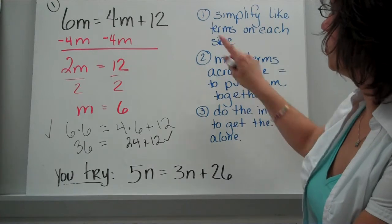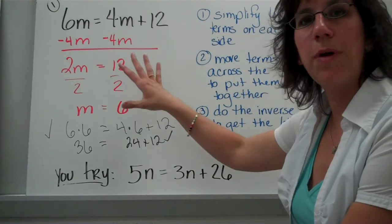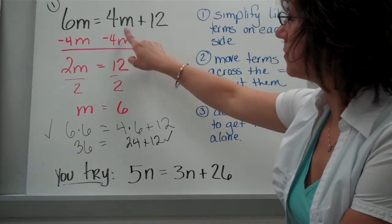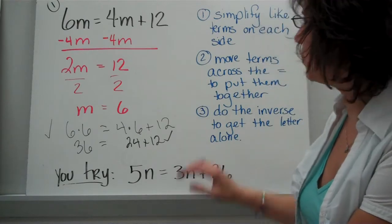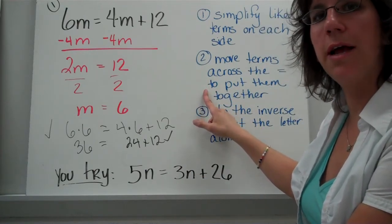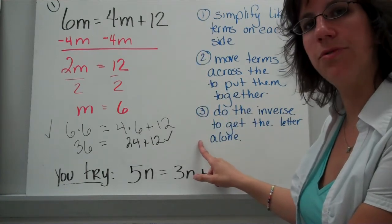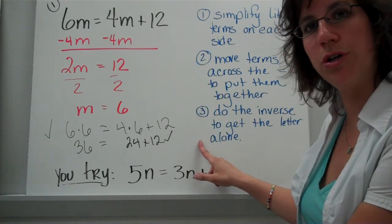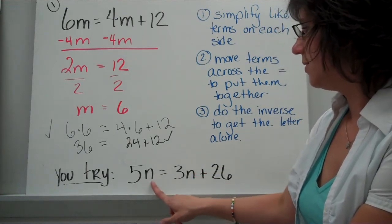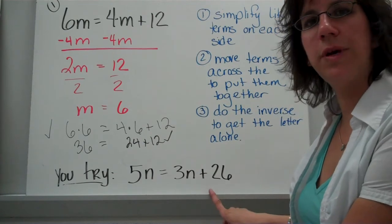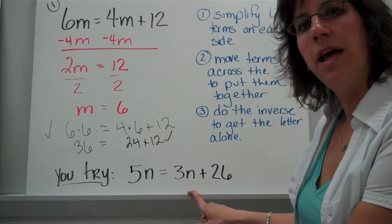Here are the steps. The first step is to put together terms that are on the same side of the equal sign. For this particular problem, we didn't need to do that — we have an M and a plain number, and we can't put those together. So we go right to step 2 and move across the equal sign, putting like terms together. Make sure you have all three of these steps written down. You can write them in your own words or put an example with it. Then go ahead and try this example: 5N equals 3N plus 26. Give it a try and come on back and we'll go over it together.